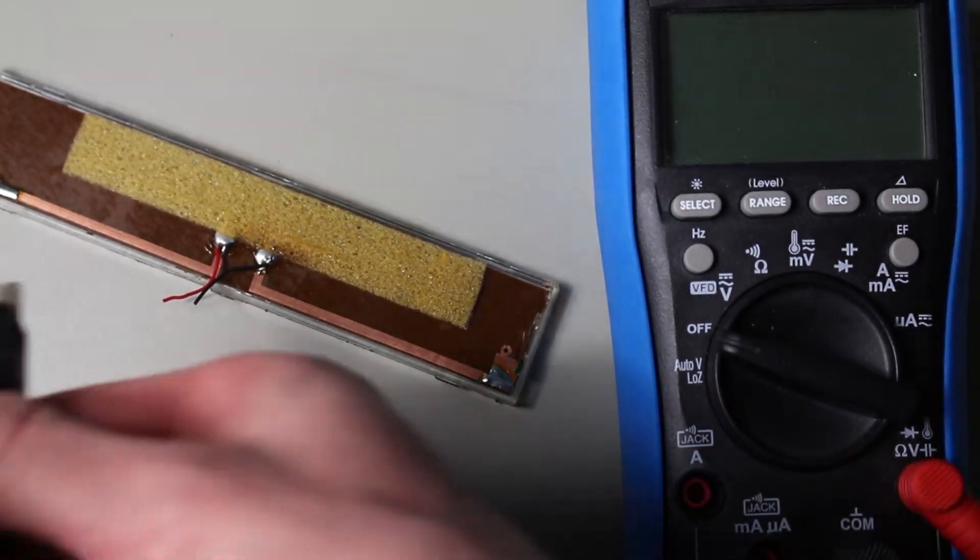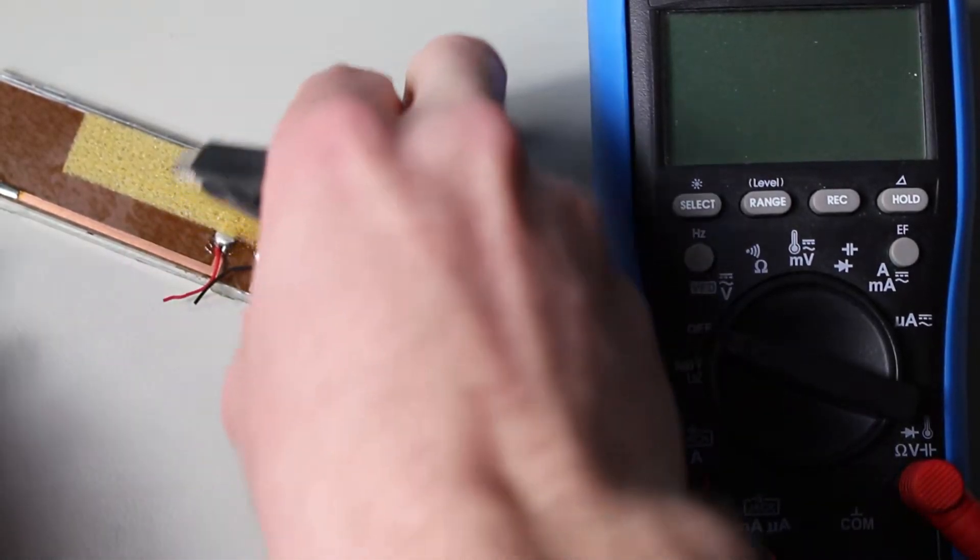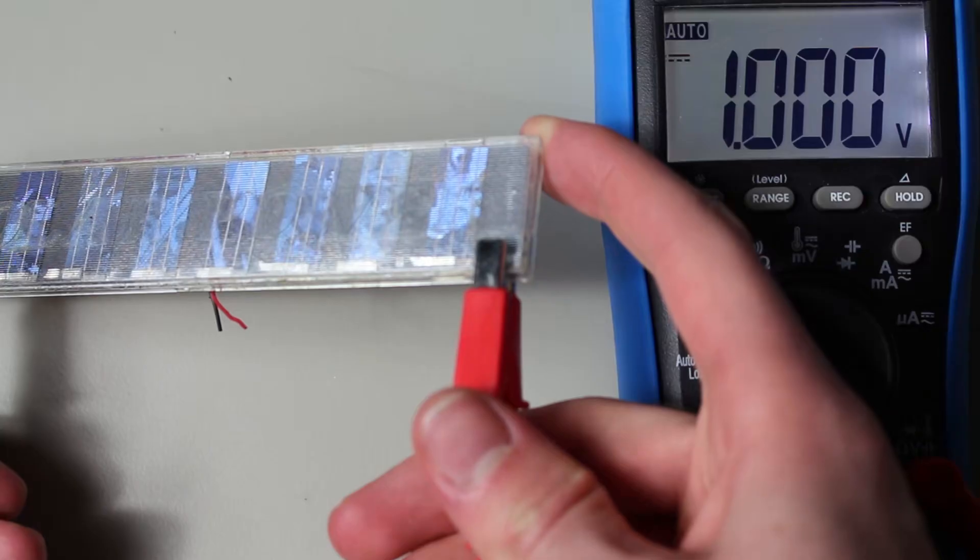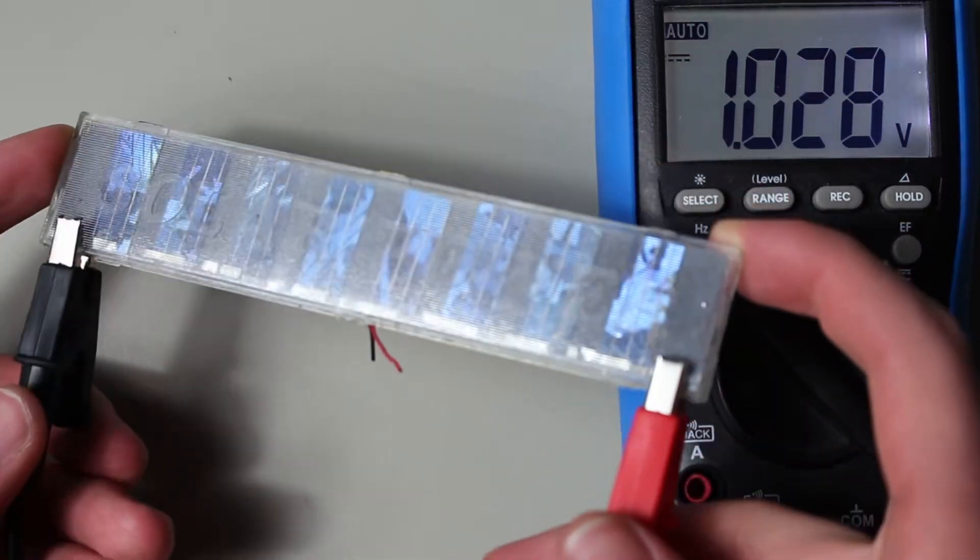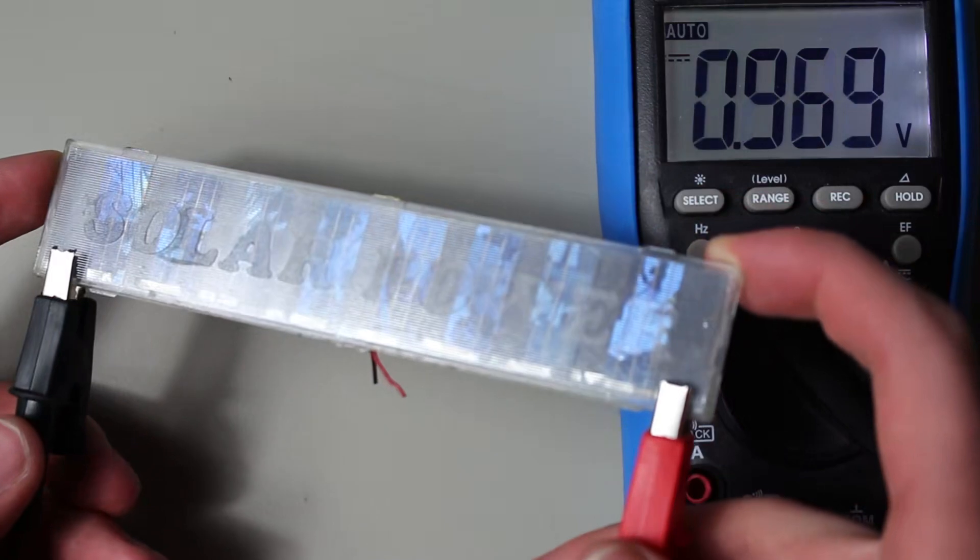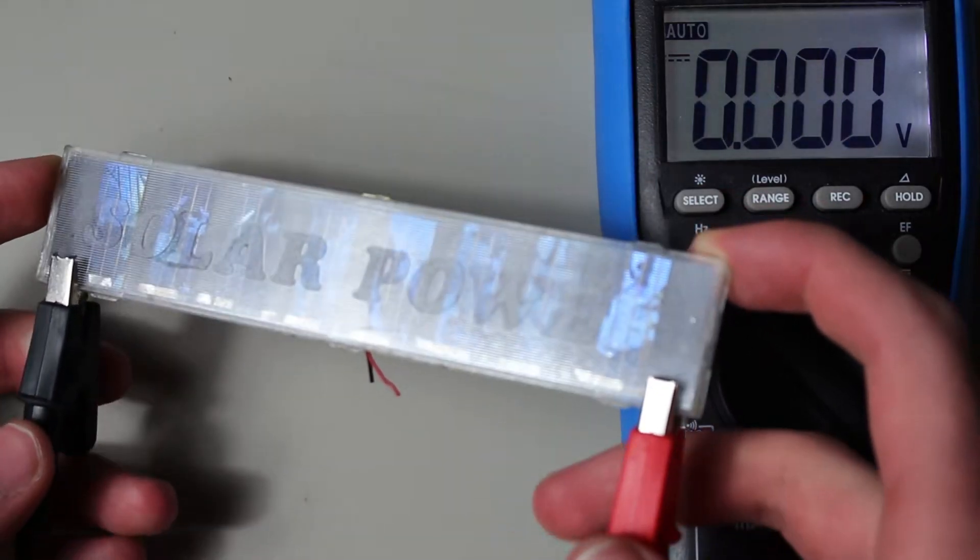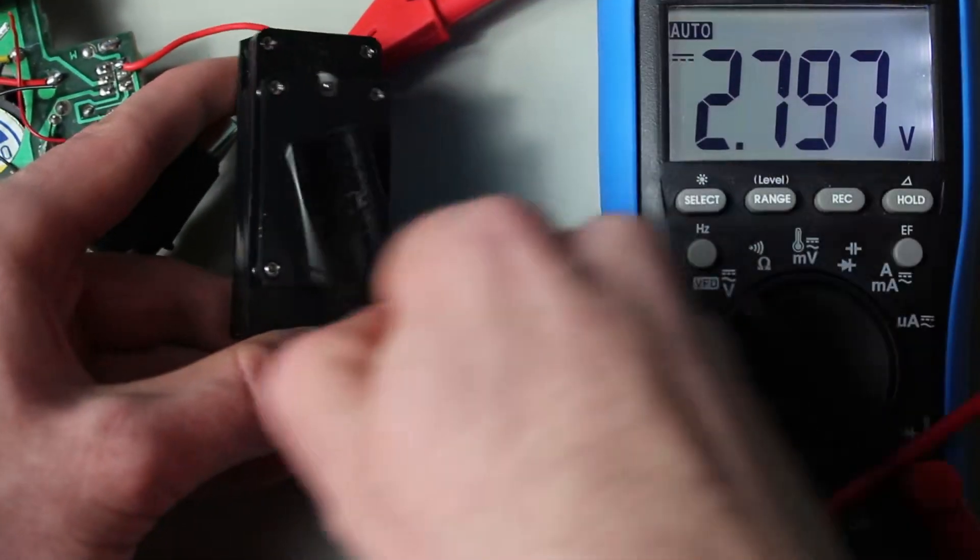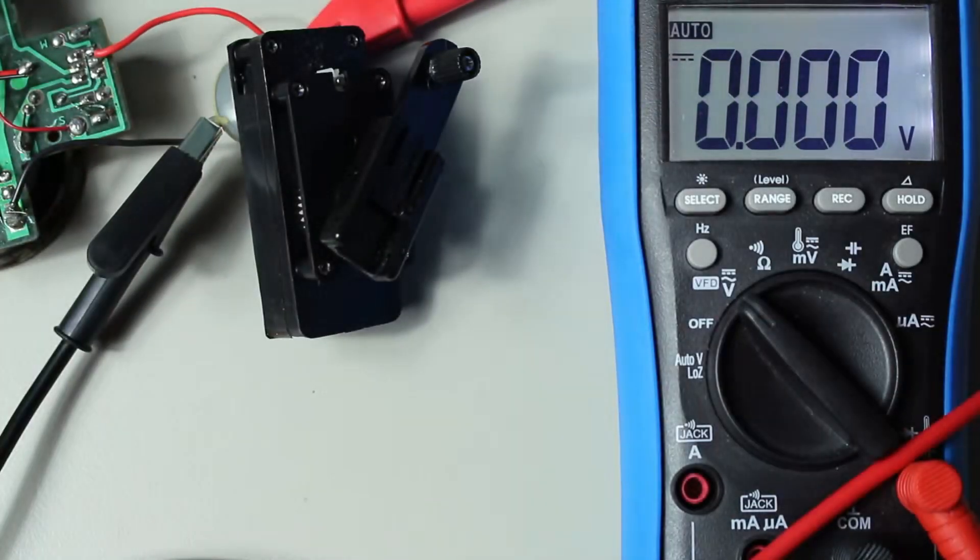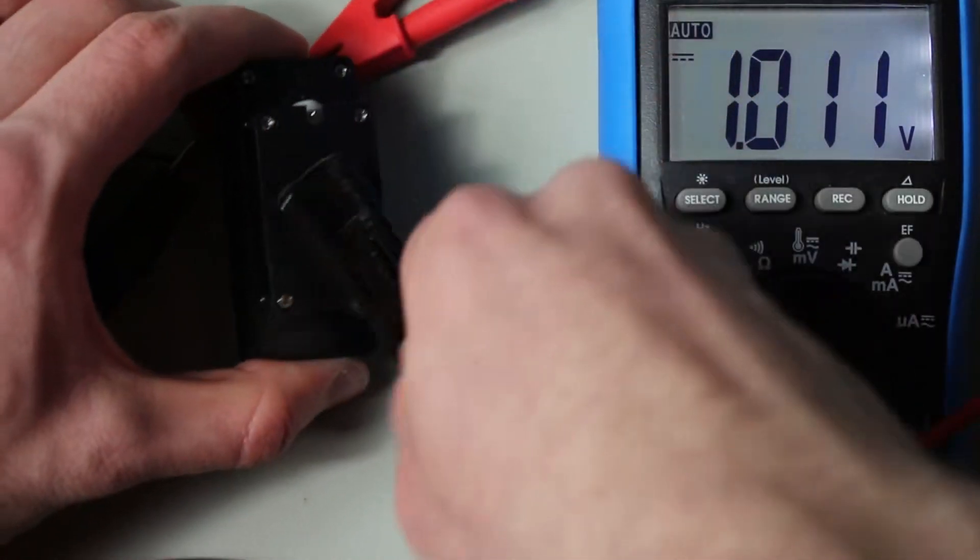Before we put the batteries into the circuit, however, let's see exactly how they will be charged. Starting with the solar panel, I put it underneath my recording light. Measuring the voltage on the output will get us 1 volt. I'm sure that it would be much higher were we to place it in direct sunlight. The motor is similar, and spinning it outputs a few volts on the terminals. It helps too that the shaft is connected to the gearbox for a higher RPM.